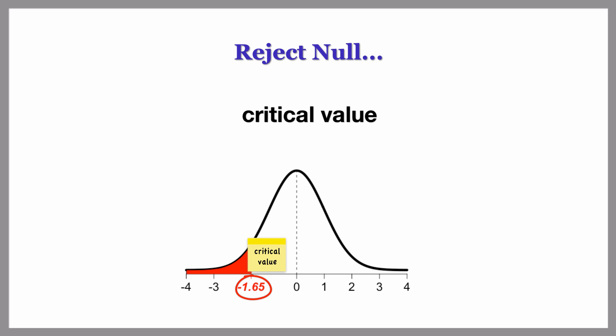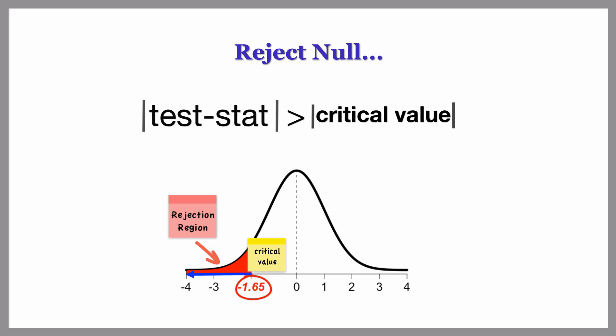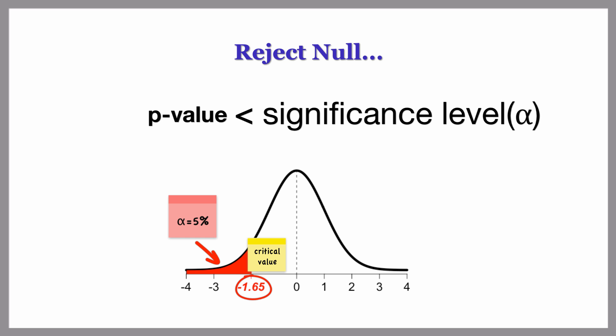With the critical value approach, if the test statistic is larger than the critical value in absolute value, we will reject the null hypothesis. With the p-value approach, we reject the null if the p-value is less than the significance level.